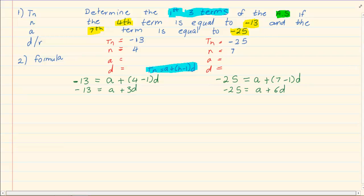Now look at what you have. You have two equations with two unknowns. So number one, we substituted into the TN, N, A, D. Then number two, we used the formula and we substituted all known values. The third step is simultaneous equations.